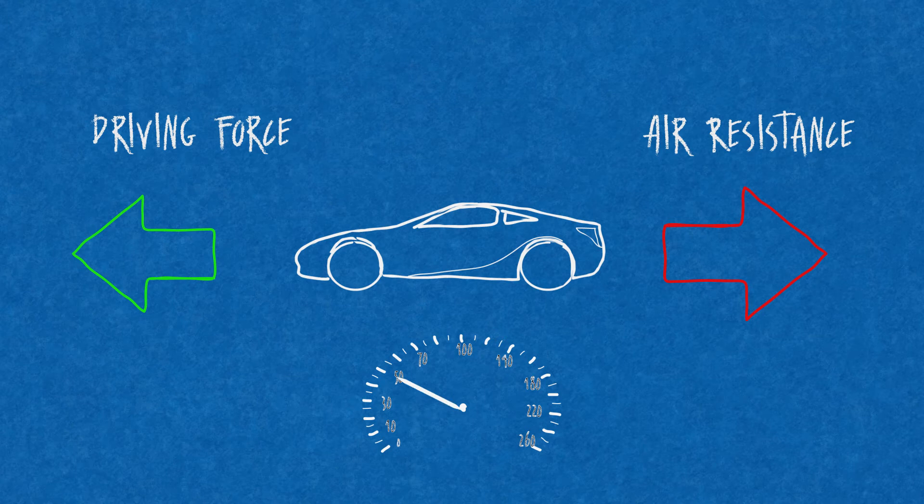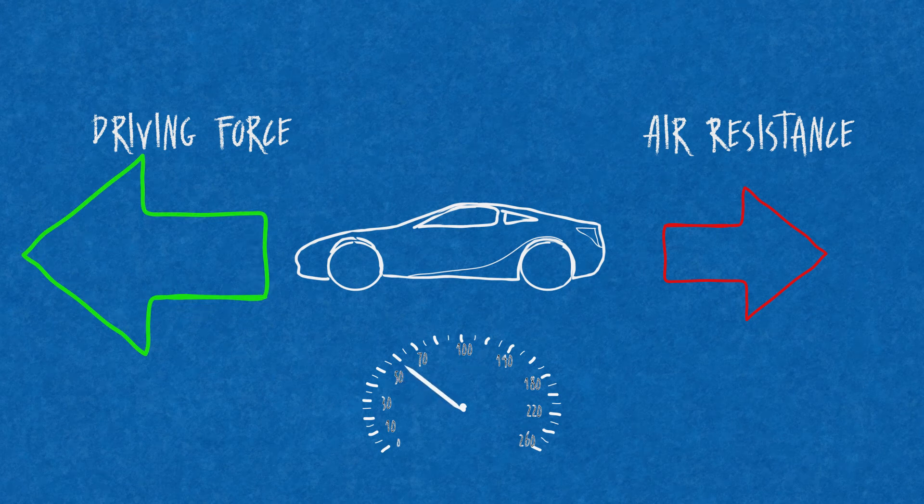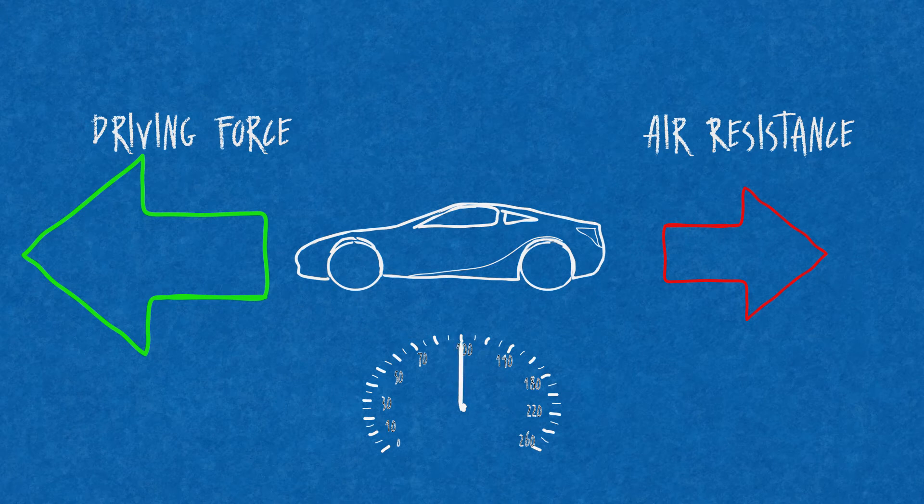If we were to increase the driving force, the car would initially speed up. We can show this by changing the size of the green arrow. The car is now getting faster, so we can say the car is accelerating.